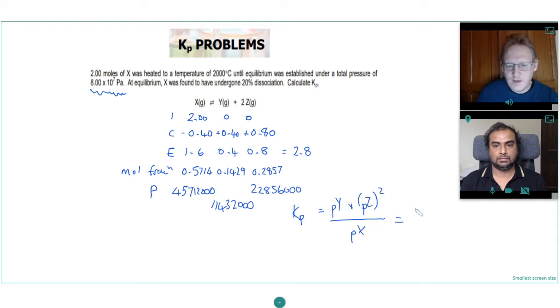We've got the partial pressure of Y, which is 1.1432 times 10 to the 7, times by the partial pressure of Z, which is 2.2856 times 10 to the 7 squared, divided by the partial pressure of X, which is 4.5712 times 10 to the 7.